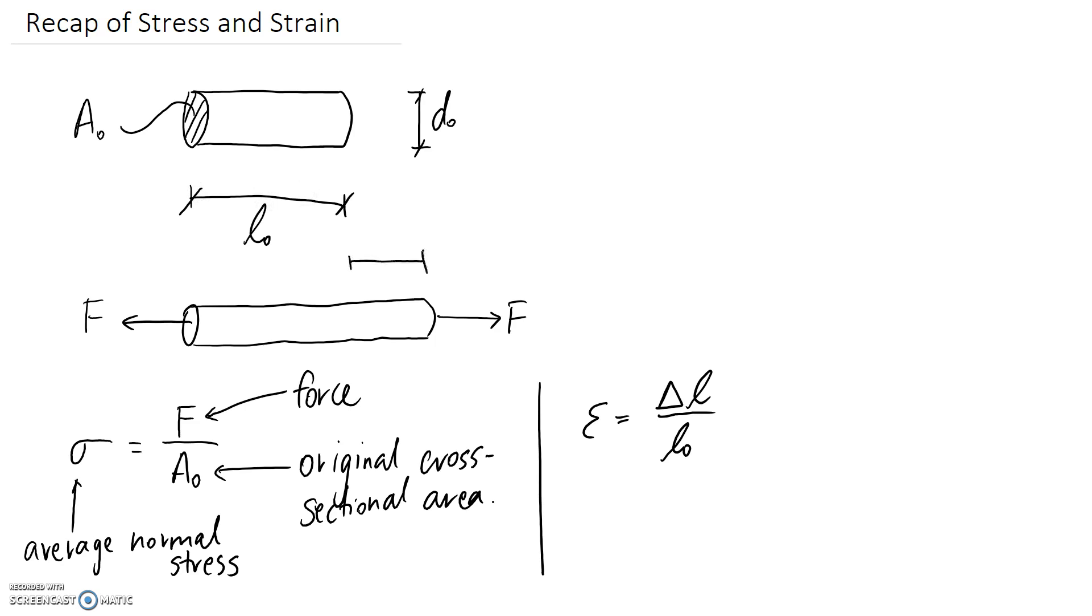Obviously as this is extended, we've got a change in length delta L of our member. So let's quickly label these: this is strain, this is the change in length, and this is the original length.